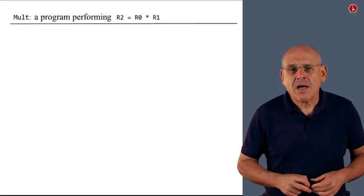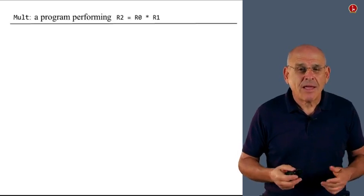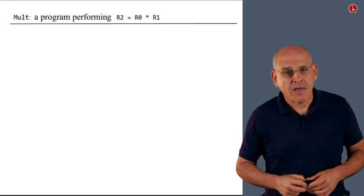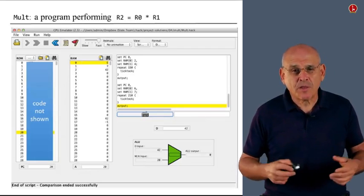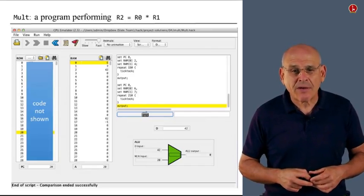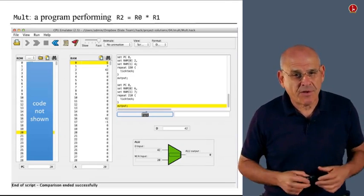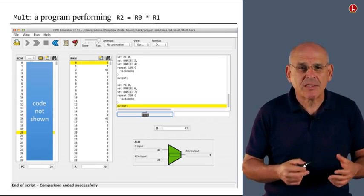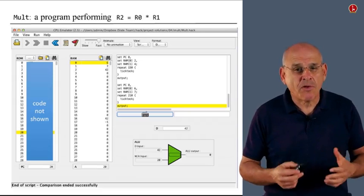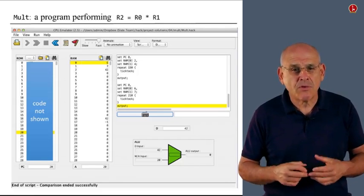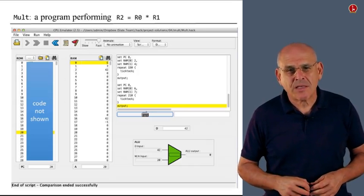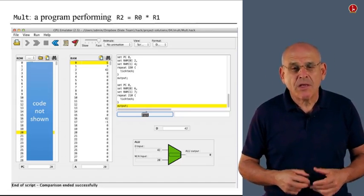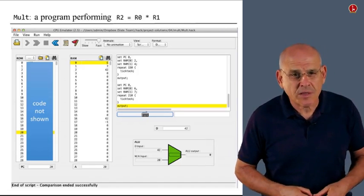So without further ado, here is the first program, which is called MULT. And the purpose of this program is to compute the product or the multiplication of R0 and R1. Here's a screenshot of this program executing in the CPU emulator. In fact, it's a screenshot of the end of this program's execution. If you look carefully at the top of the RAM, you will see that RAM 0 is 6, RAM 1 is 7, and RAM 2 is 42. And that's exactly what this program is supposed to do, to multiply the first two registers in the memory and place the product of these two numbers in RAM 2.